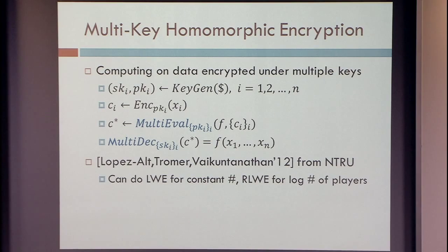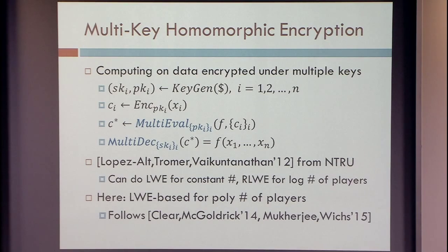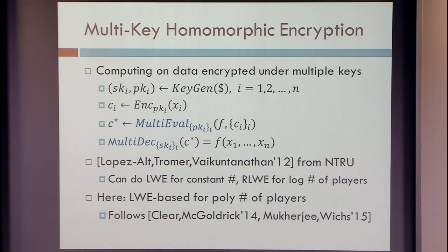The possibility of doing this under the NTRU assumption was done in 2012 by Lopez-Alt, Tromer, and Vaikuntanathan. That construction's obvious LWE extension supports only a constant number of parties — actually the complexity grows exponentially with the number of parties — or you can get logarithmically many parties if you use ring-LWE-based schemes. But here I want to do a different construction that lets you do LWE-based multi-key homomorphic encryption for polynomially many players, following the construction of Mukherjee, Wichs, Clear, and McGoldrick.